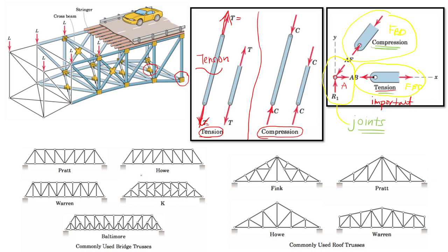There are a lot of commonly used trusses. For example, this one is Pratt — named after the inventor. This is Howe, this is Warren, and this is K. These are bridge trusses, and these are roof trusses. There will be some typical designs that structural engineers use that were deemed to be safe, and they will choose these particular designs based on their different applications.